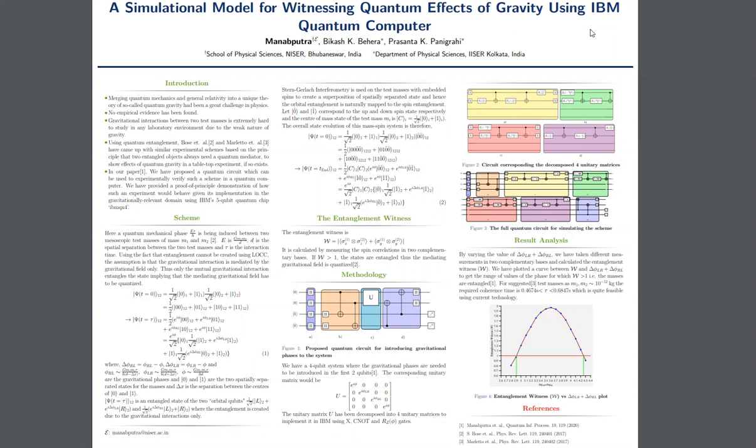We all have heard about the theory of quantum gravity, but there is no empirical evidence for it because the gravitational interaction is extremely weak to measure in any experiment. But recently, there have been two schemes from Bose et al. and Marletto et al., they both are quite similar, to use quantum entanglement to show whether quantum gravity actually exists or not.